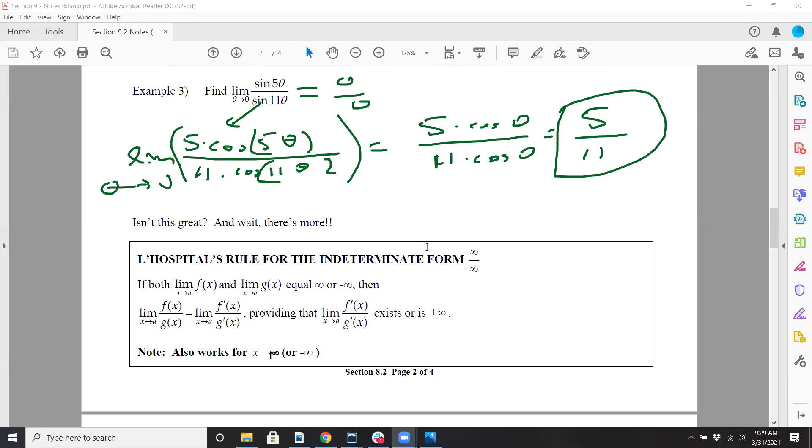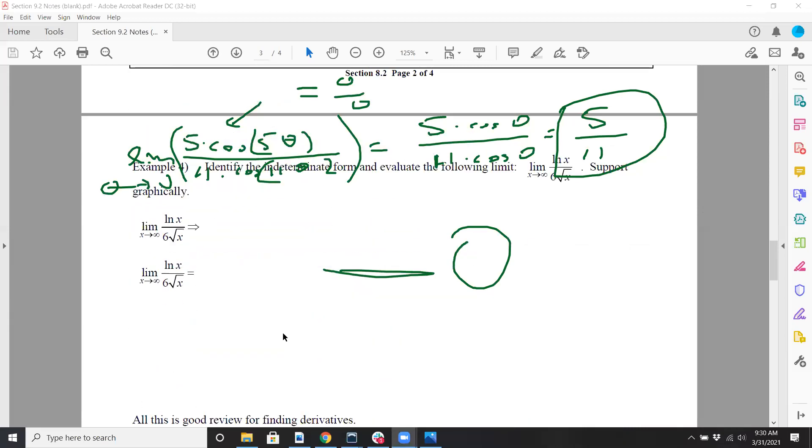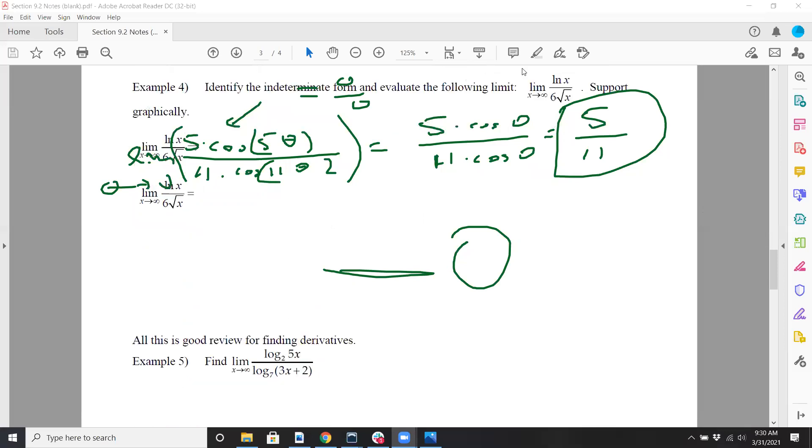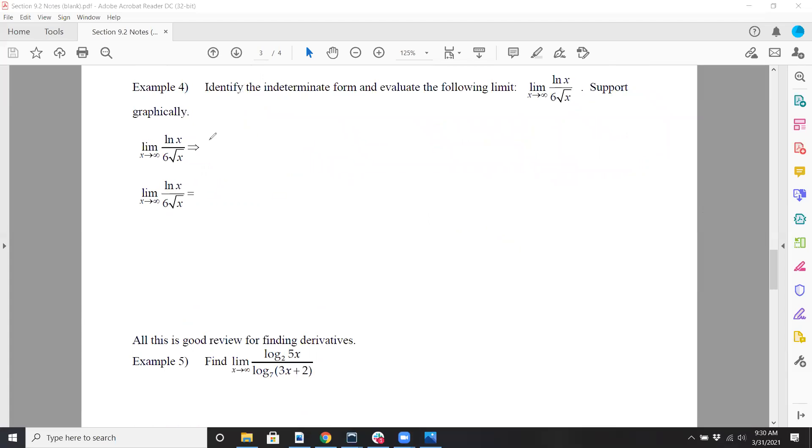And also, you could do this when you get this kind of scenario. What if when you plug where x is approaching into your numerator and denominator separately and you get infinity over infinity? That's also considered indeterminate form, because we don't know what infinity over infinity is. So L'Hôpital's rule works really well. And it also works with negative infinity. If you have mixed up, like positive infinity over negative infinity, or negative infinity over positive infinity.